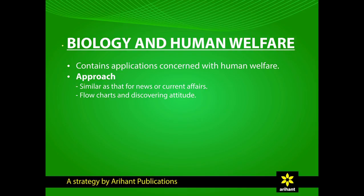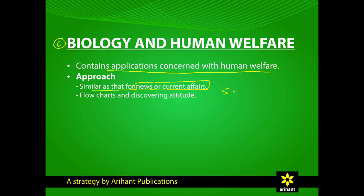The last section is Biology and Human Welfare. It enlists applications concerned with human welfare and should be prepared in the same manner as one prepares for news or current affairs. In NEET, 5 to 6 questions are asked from this section. Preparing flowcharts to understand applications and approaching facts with a discovering attitude are the two main requirements to command this section.